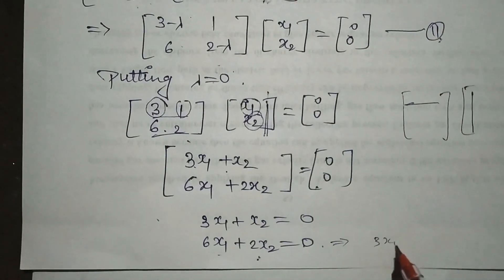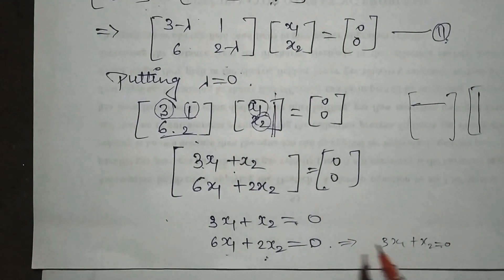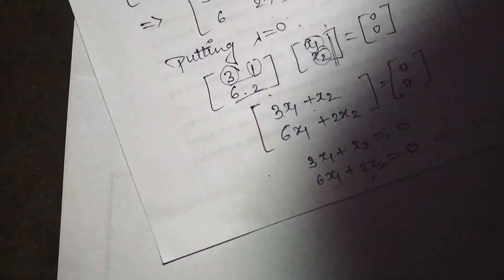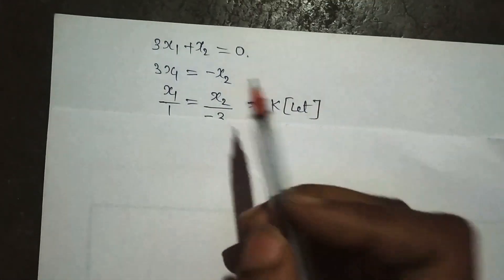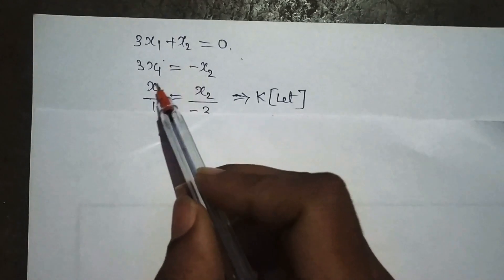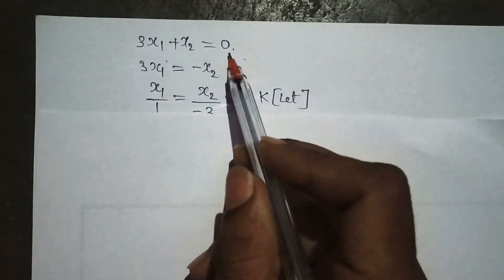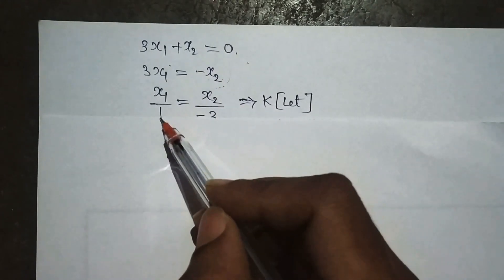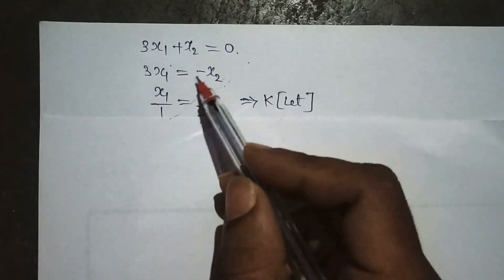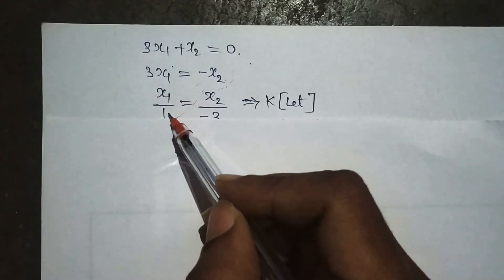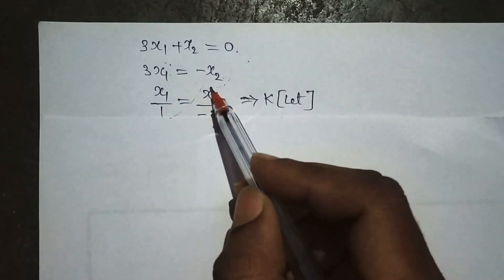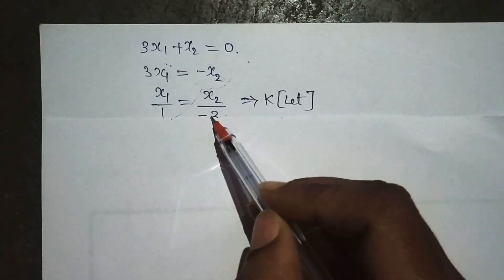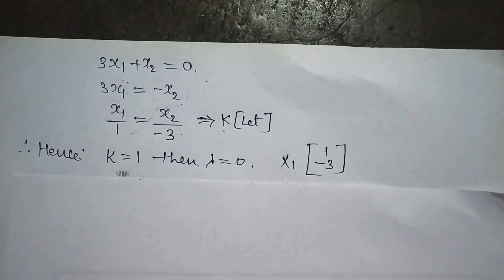The two equations are the same, so we solve once. This becomes 3x₁ + x₂ = 0. We transfer and divide: x₁/1 = x₂/(-3). We equate this to k.